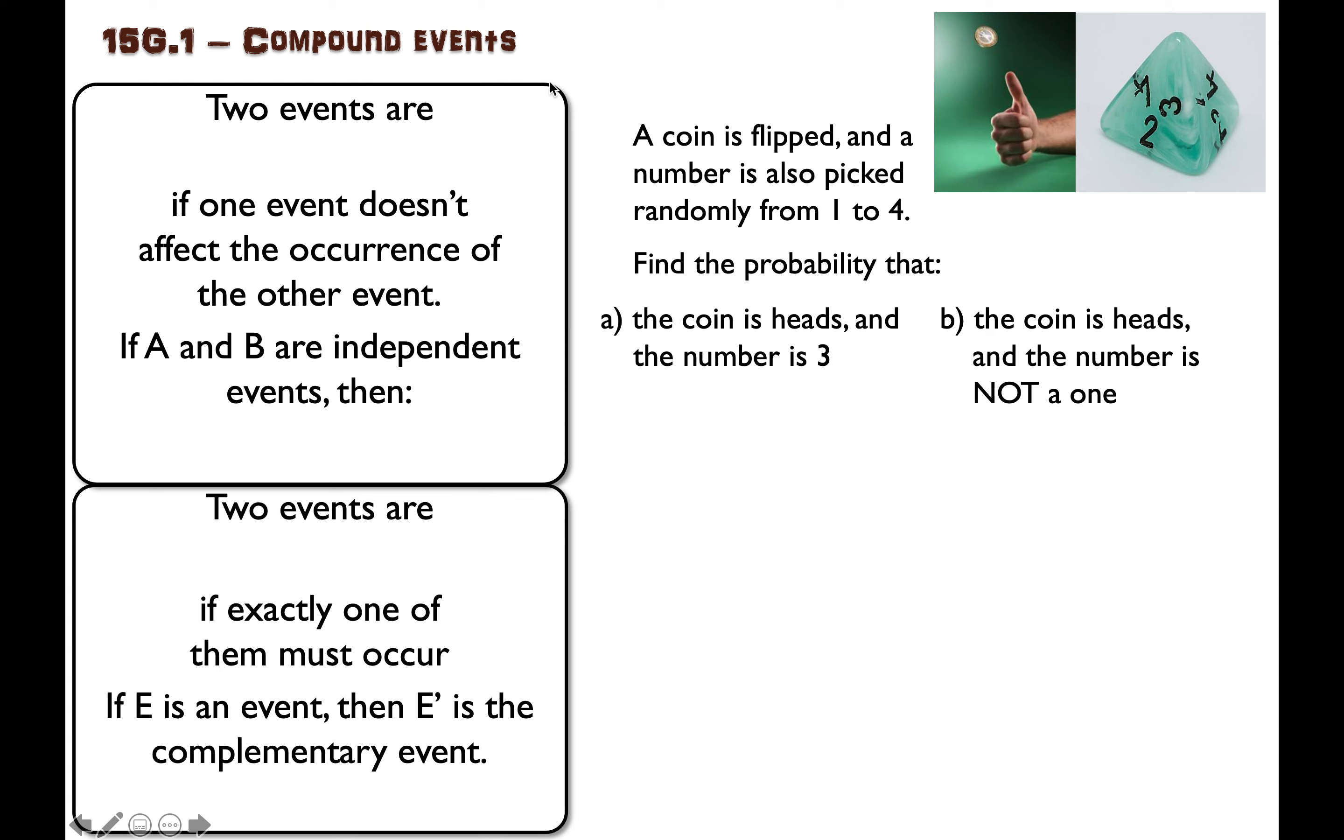Let's talk about compound events, which is where we combine two events together, like the coin being heads and also the number being three.